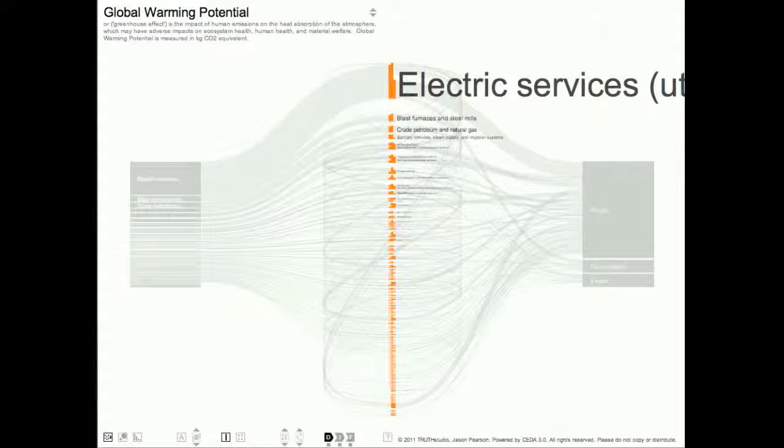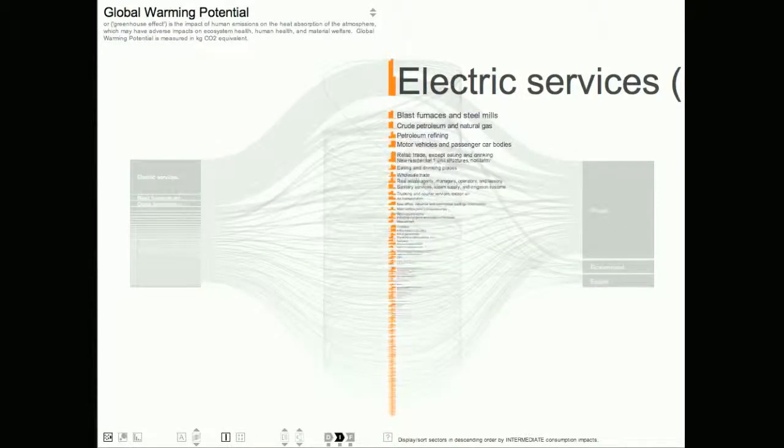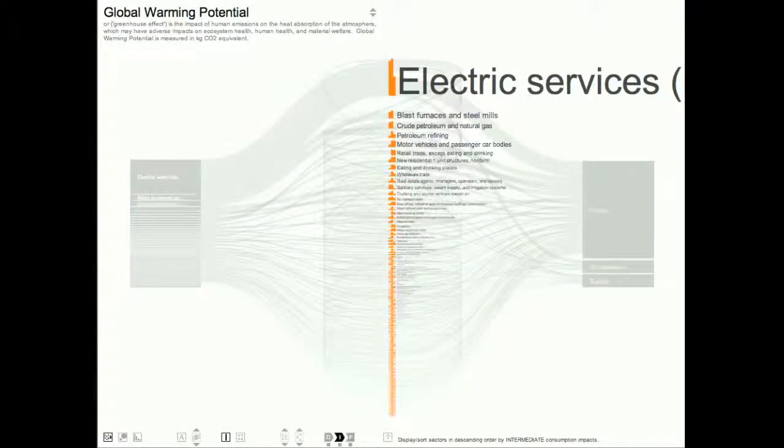Like all of the display modes, the network mode can be viewed according to one of the three impact perspectives. In this case, the vertical stack in the center shows all 480 major industrial sectors in the U.S. economy in descending order of importance based on their direct contribution to global warming. If I click on the intermediate button at the bottom of the screen, the stack is reorganized in descending order of importance based on each sector's intermediate contribution to global warming.